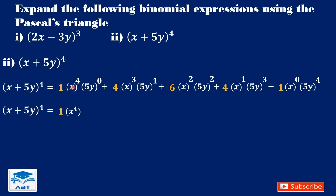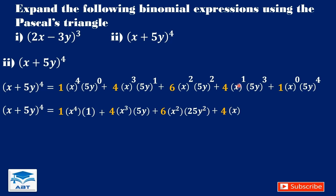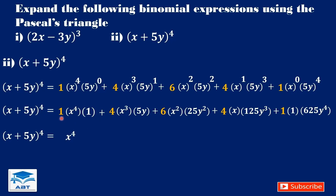So we have 1 times x to the exponent 4. Any number to the exponent 0 is 1. We have x³ here, and 5y to the exponent 1 is still 5y. We have x² here; 5 squared is 25, and the square also affects the y. We have 4, x to the exponent 1 is x, and 5 to the exponent 3 is 125, giving 125y³. We have 1 here; x to the exponent 0 is 1, and 5 to the exponent 4 is 625, also affecting the y. So 1 times x⁴ times 1 is x⁴.